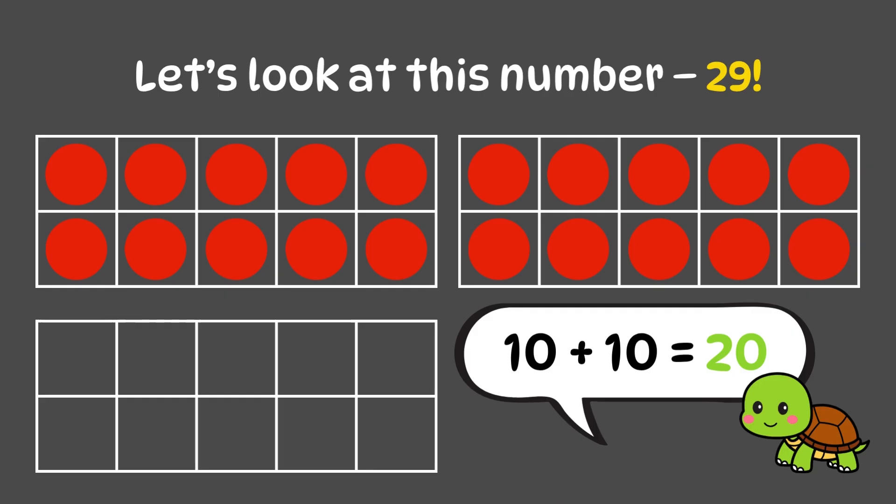Then he counted the last dots. One, two, three, four, five, six, seven, eight, nine. Twenty plus nine is twenty-nine. That's how we show it using the tens frames.